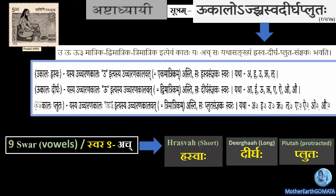Panini is saying: just like the Swar 'U' has three timings of pronunciation — Hraswa, Dirgha, and Pluta — so too do all nine Swar have relevant timings of pronunciation. In this sutra, 'Kal' means timing, so in Sanskrit this timing of vowels is expressed in terms of 'Matra'. This we will understand further.